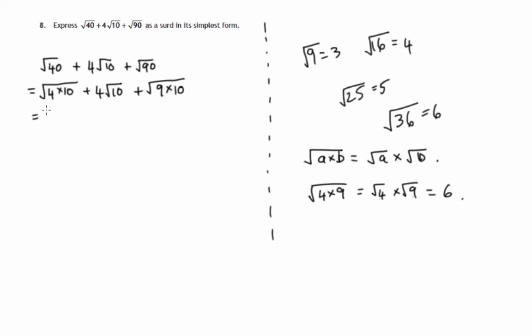So we are allowed to take the square root of 4 and multiply it by the square root of 10. We'll just leave this one as it is just now. Square root of 9 times the square root of 10.